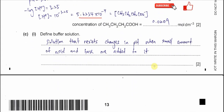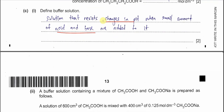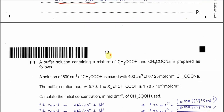Part C1: define buffer solution. A buffer is a solution that resists change in pH when a small amount of acid or base is added to it. This is the standard definition — it resists pH change.